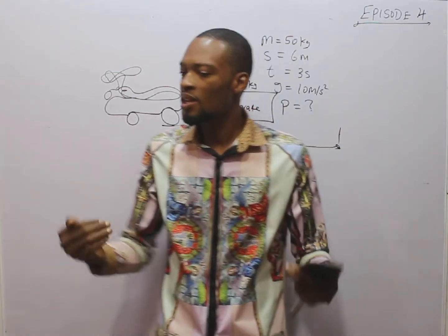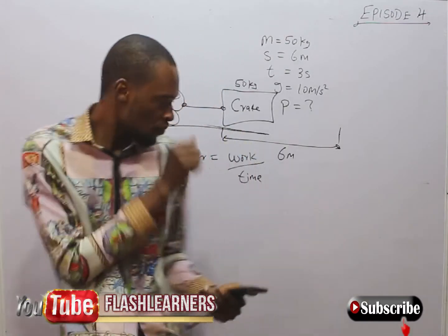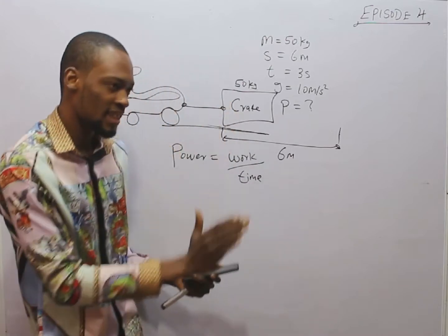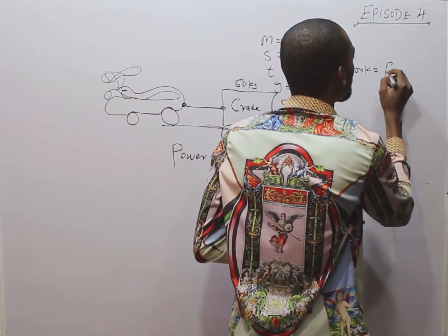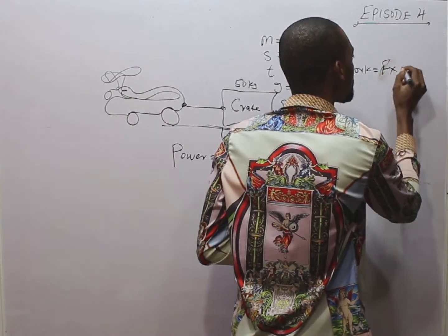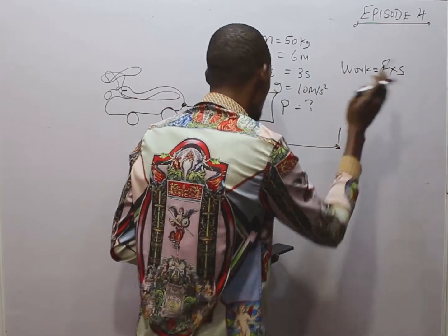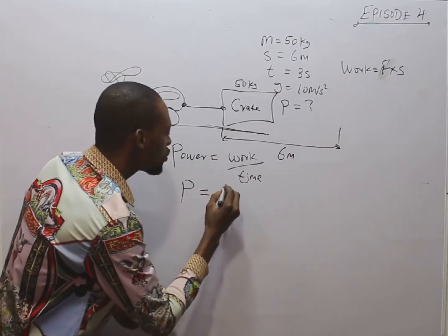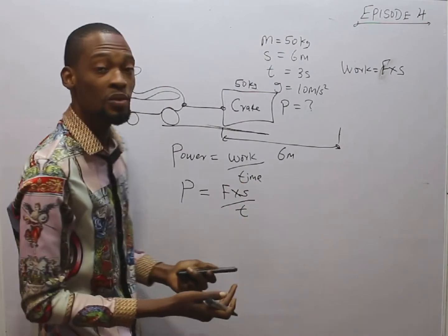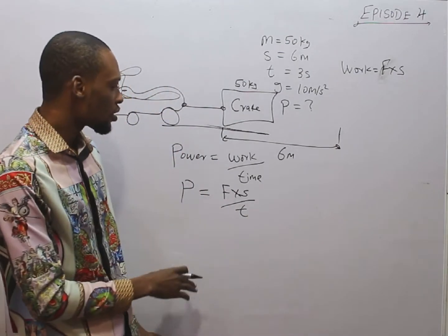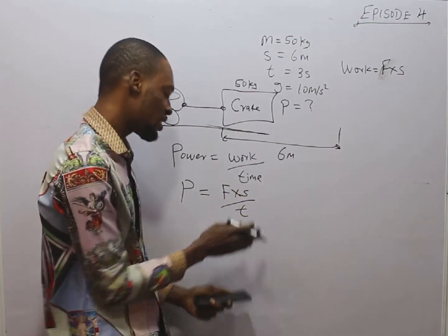Work done is simply force times distance. I am introducing you now to derivations. Derivations are very easy if you understand definitions and concepts and if you have an open mind. Power is work over time. Work itself is force times distance. So if power is work over time and work is force times distance, it simply means that power P is also force times distance over time.